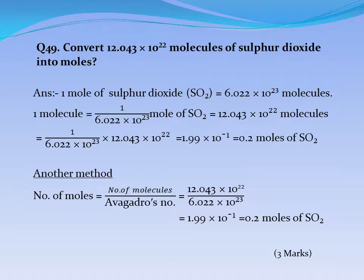Question No. 49: Convert 12.043×10²² molecules of sulfur dioxide into moles. Answer: 1 mole of SO2 = 6.022×10²³ molecules. Therefore, number of moles = 12.043×10²² ÷ 6.022×10²³ = 1.99×10⁻¹ = 0.2 moles of SO2. Another method: Number of moles = number of molecules ÷ Avogadro's number = 12.043×10²² ÷ 6.022×10²³ = 0.2 moles of SO2.